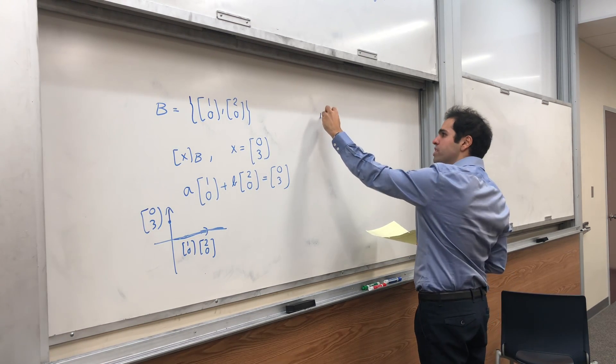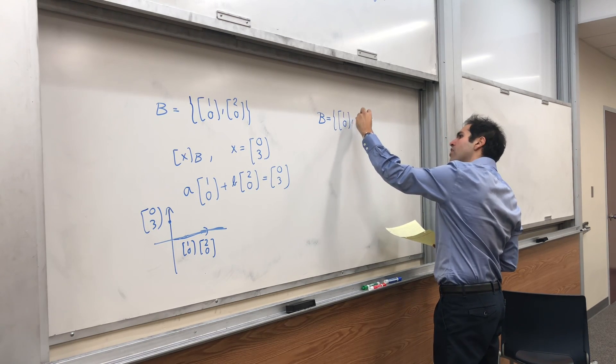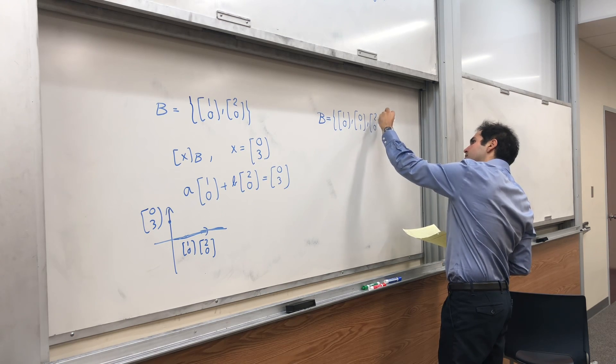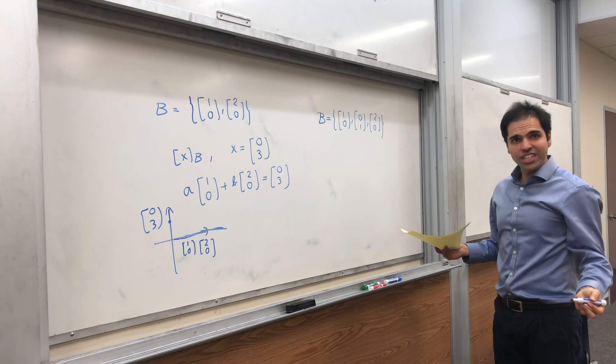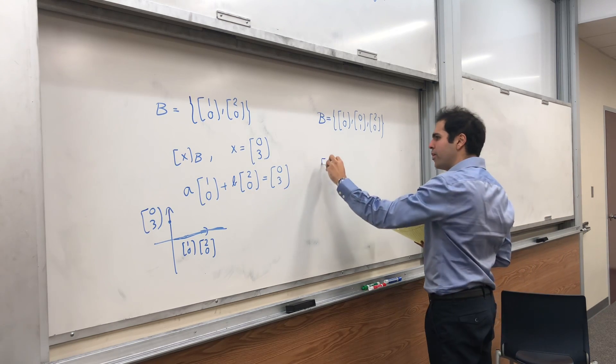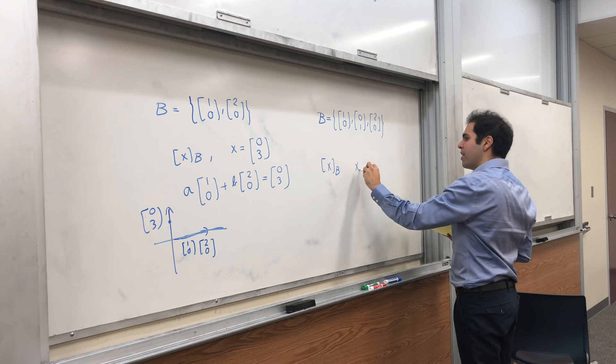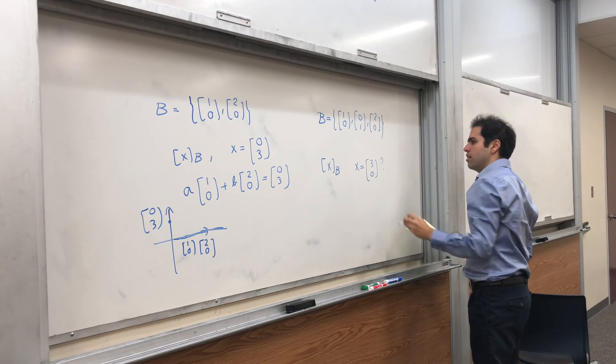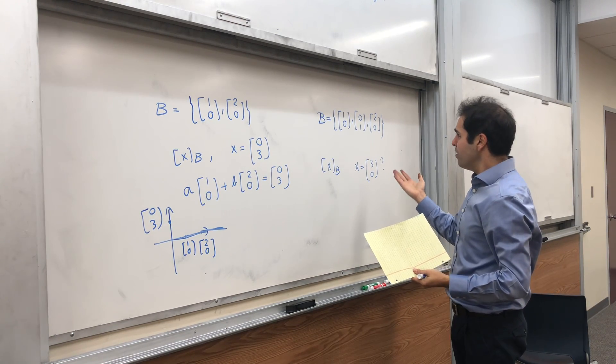Now, suppose we take something as linearly dependent. Let's say (1,0), (0,1) and (2,0). Then the question is, what are the coordinates of x where x is (3,0)?